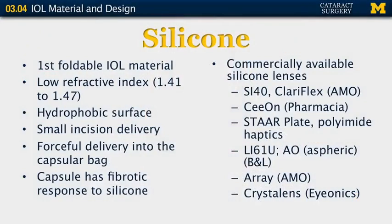There are several commonly used lens materials in use today. Let me first speak about silicone. Silicone was actually the first foldable intraocular lens material available. It has a low refractive index, very close to the natural human lens. It is hydrophobic, so when you receive this lens in the operating room, you will open up the package and it is packaged dry. Silicone does tend to deliver rather forcefully into the capsular bag and opens pretty quickly compared to some of the other lens materials. In addition, the capsular bag has a rather fibrotic response to silicone, and you will see more posterior capsular opacification.